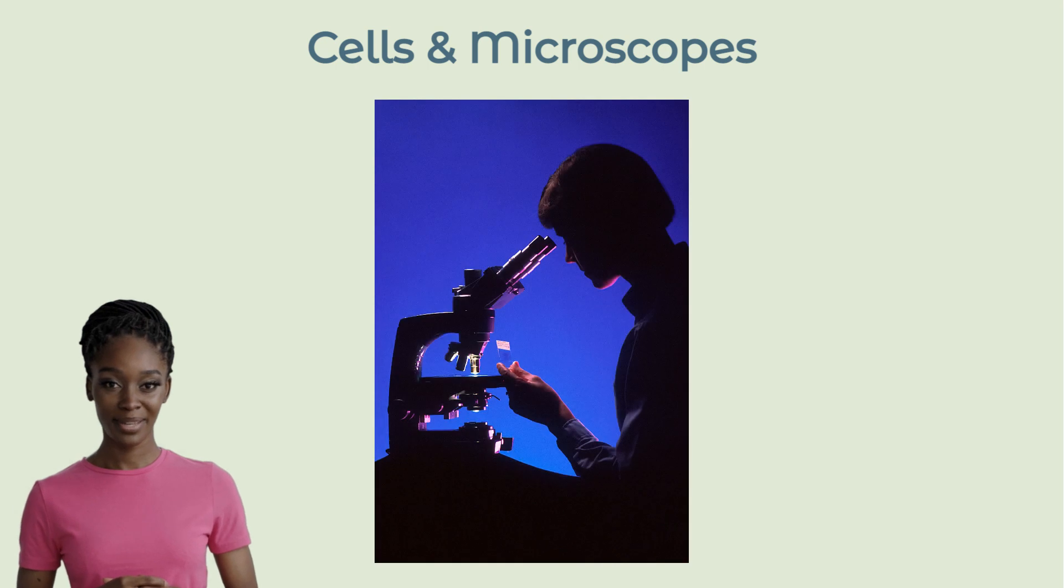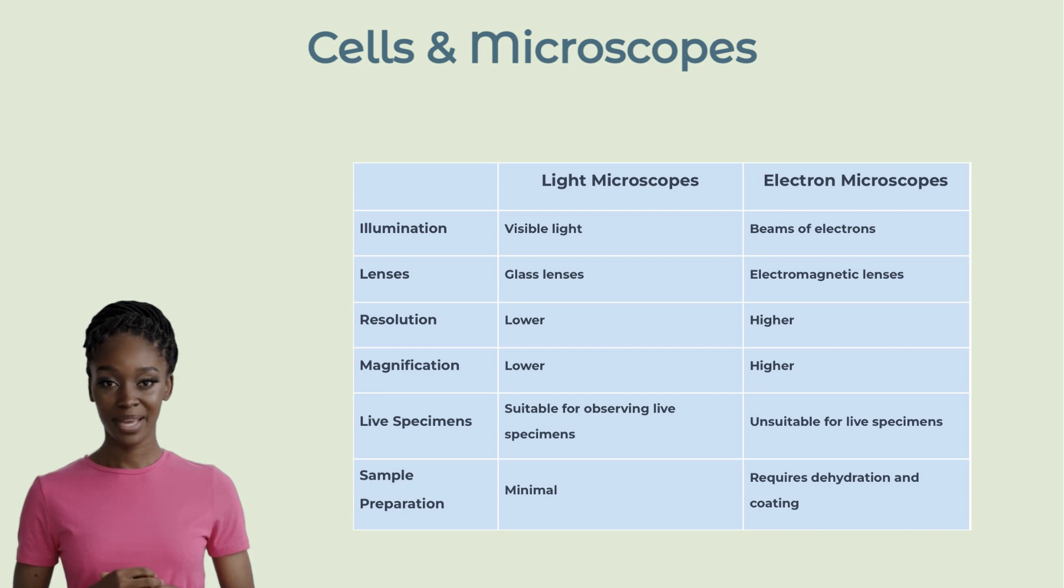Next up, let's examine light and electron microscopes. Light microscopes use visible light and lenses to magnify samples, making them suitable for observing live specimens. However, they have a lower resolution and magnification compared to electron microscopes.